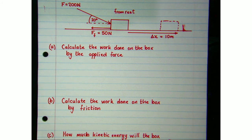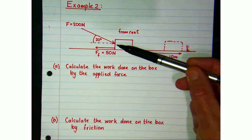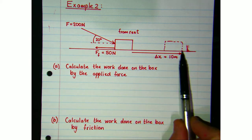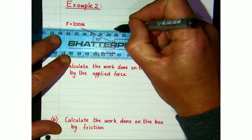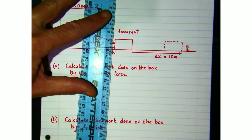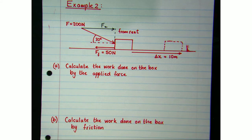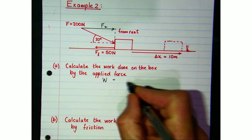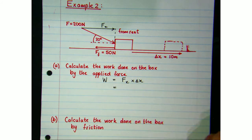Now let's calculate the work done by the applied force. You'll notice that the applied force is not in the direction of the displacement, so again we need to find the horizontal component Fx — the component that acts parallel to the displacement. We're going to use that to find the work done by the applied force. So it's Fx multiplied by the displacement.